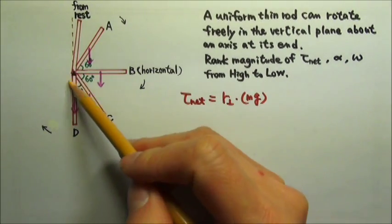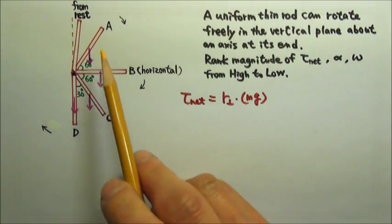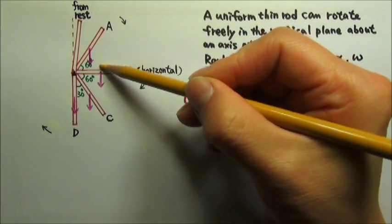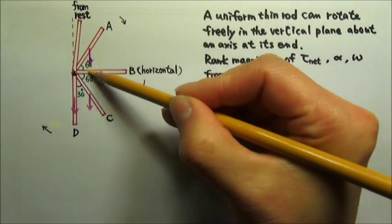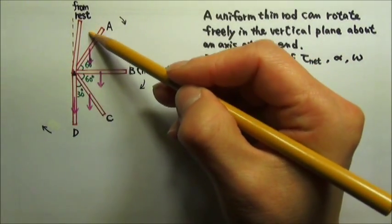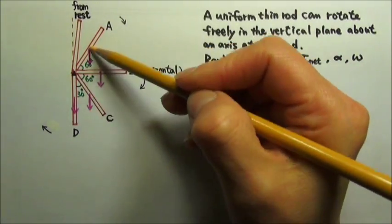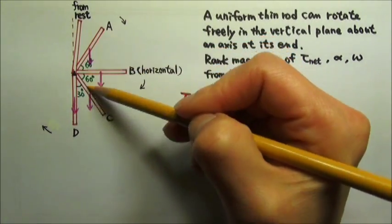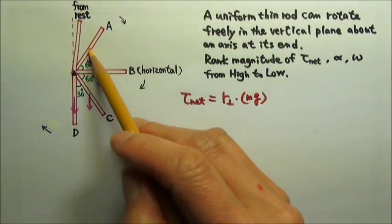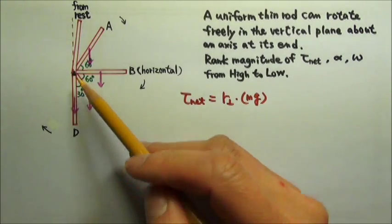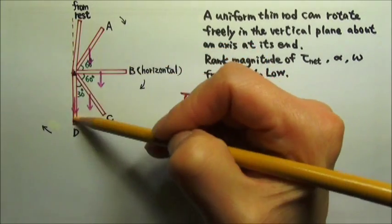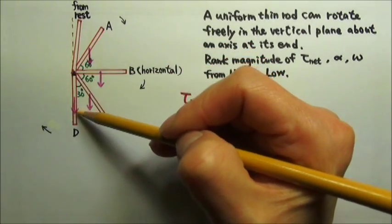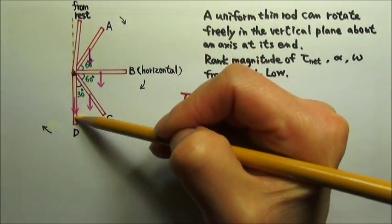The line of force and the axis. So the one with the largest lever arm is this force. And then it's these two. The lines of force are on the same line, so they have the same lever arm. And then for this force, the line of force goes through the axis. So for D, the lever arm is zero.